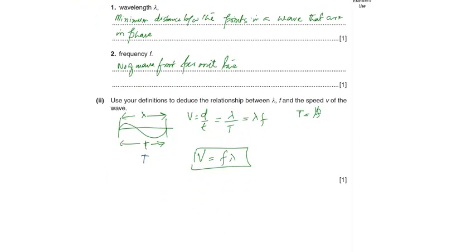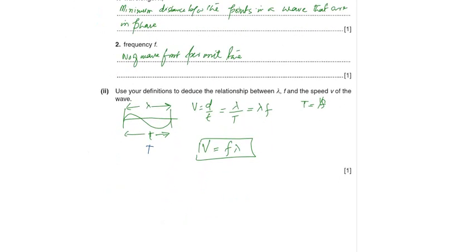Use definitions to deduce the relationship between lambda, frequency, and the speed of the wave. So here we have the distance, which is a wavelength, and the time required to complete this wave is a period. As we know that velocity is distance upon time, the wavelength is replaced with d and small t replaced with capital T period. And one upon period is actually the frequency, so speed is equal to frequency into wavelength.